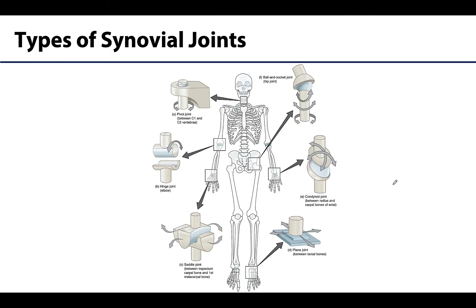There are going to be six main types of synovial joints, and these are typically divided into these types by the shape of their articulating bony surfaces. That shape will greatly affect what types of actions are possible at each.